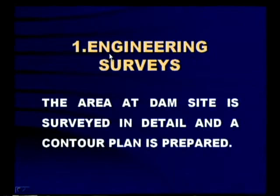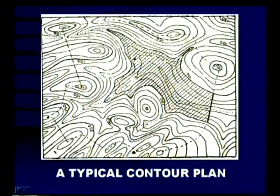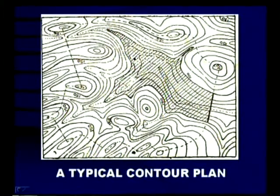Engineering surveys: the area at the dam site is surveyed in detail and a contour plan is prepared. A contour plan is a plan showing the contours of the area. A contour is a line joining points of equal elevation. In a typical contour plan of a proposed dam site, you have a series of contours — for example a 100 contour and 150 contour. The hatched area shows the storage area of the reservoir, the dam site is indicated, and the amount of water stored depends upon the height of the dam.